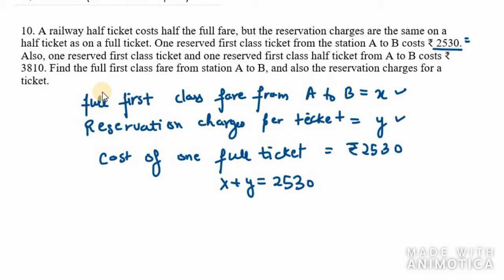In the next line, one reserved first class ticket is x plus y. And one reserved first class half ticket means half fare plus reservation.